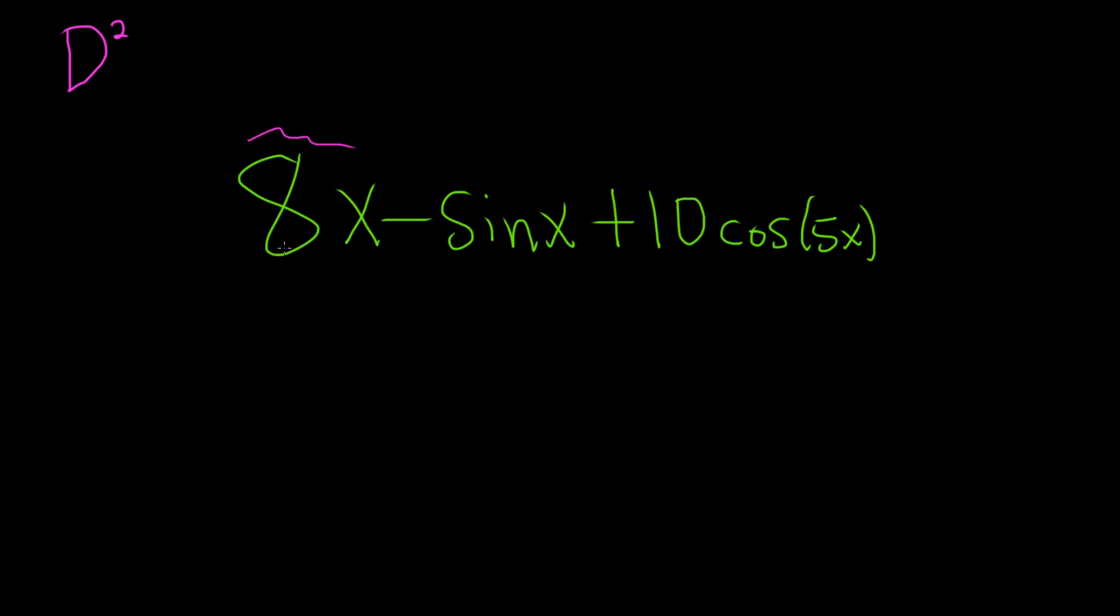So if you take the derivative once, you're going to get 8. If you do it twice, you'll get zero. So d squared is going to annihilate this piece.